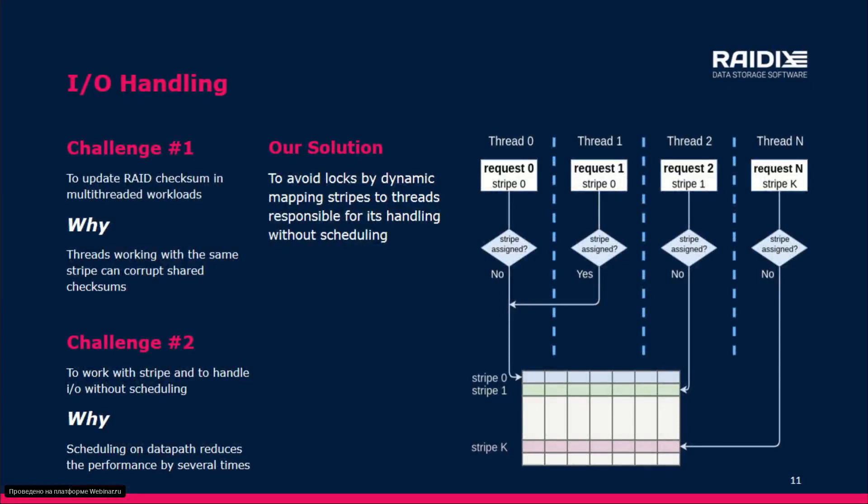The main performance challenge was the data path with IO handling. Threads working with the same stripe can write data and update checksums in parallel — this is a problem. We can use a locking mechanism for the stripe, but that worsens performance. Or we can work without locking, but we lose data integrity. The second problem is scheduling: when an IO request comes from a thread, we should keep that IO in the same thread on the same CPU, otherwise performance is lost. Our solution was a dynamic mapping algorithm for stripes and threads to avoid locks while saving data integrity, also allowing IO handling without scheduling to another thread.